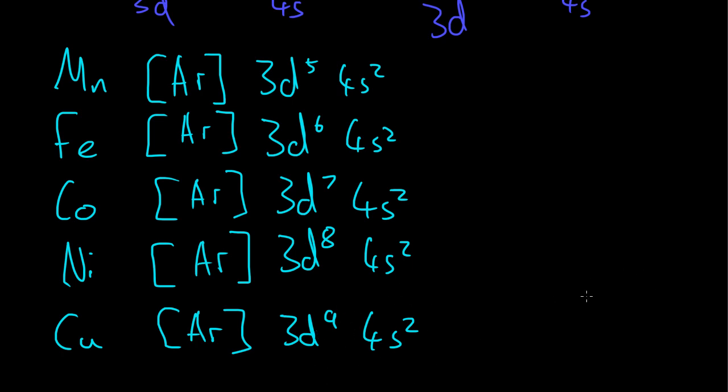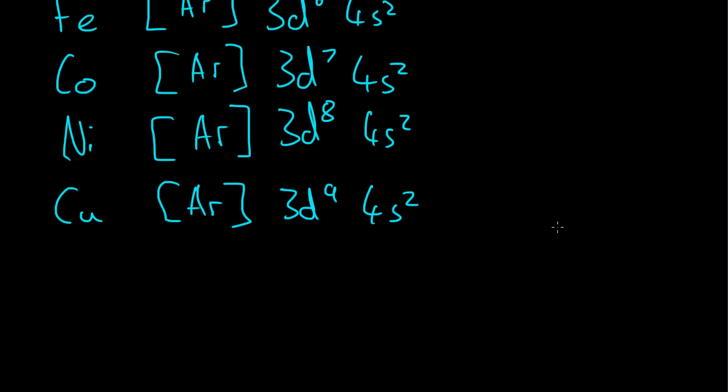But as with the other case with chromium, it is more stable for an electron to be promoted from the 4s to the 3d, thus giving copper this configuration: Ar 3d10 4s1. Because this is more stable.